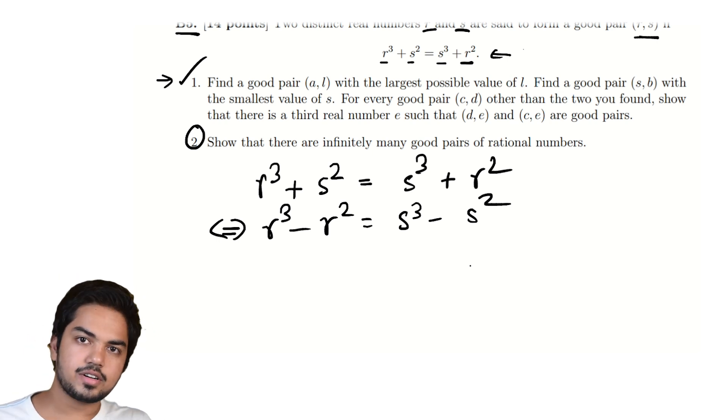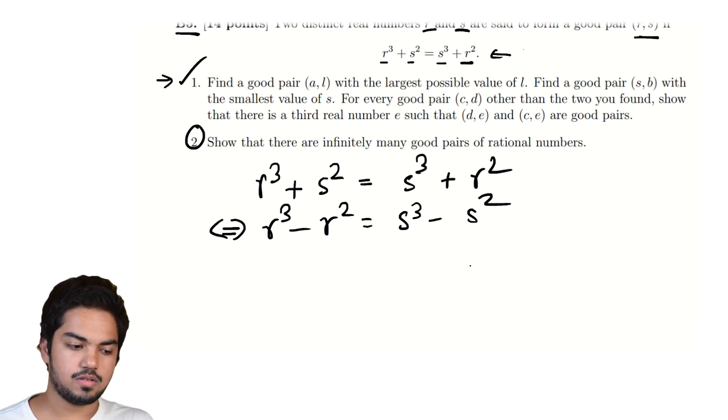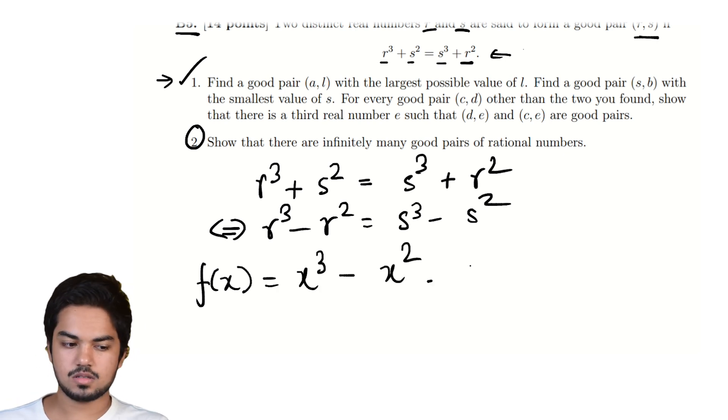And now suddenly we're looking at just different values of one polynomial function, which is f(x) = x³ - x². This is a polynomial.